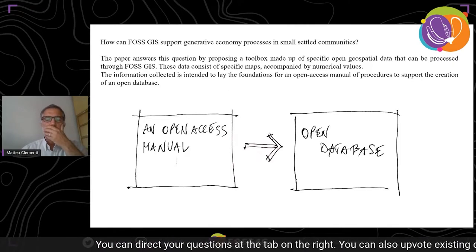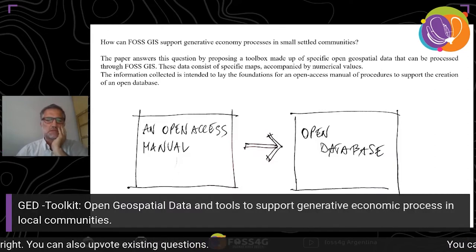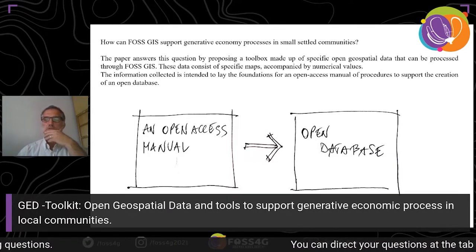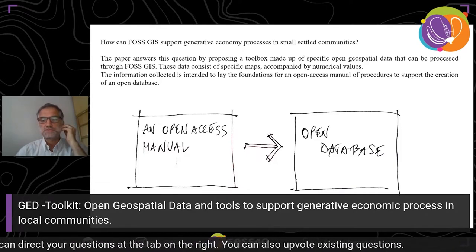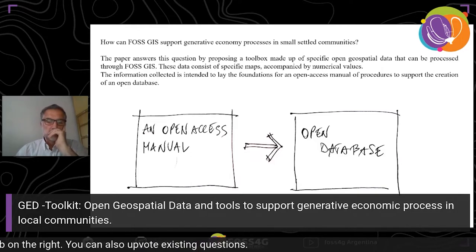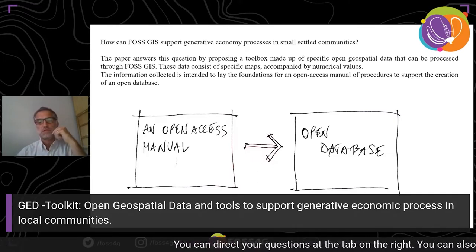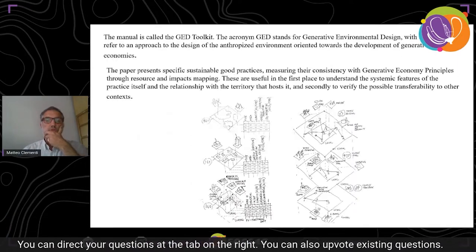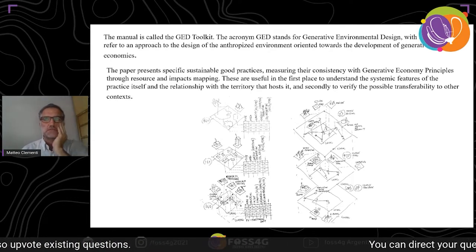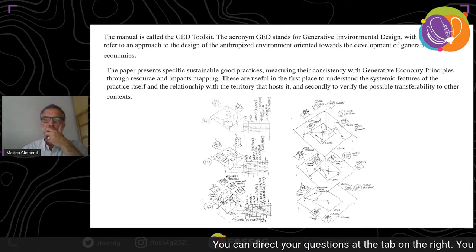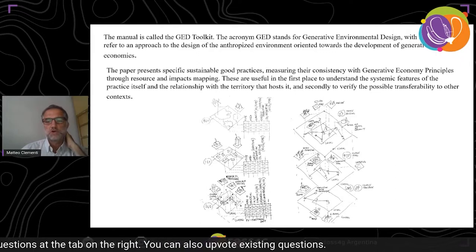The main question the paper would like to answer is: how can FOSS GIS support generative economic processes in small settled communities? The paper answers this by proposing a toolbox made up of specific open geospatial data that can be processed through FOSS GIS. This data consists of specific maps accompanied by numerical values, intended to lay the foundation for an open-access manual of procedures and an open database — called the JET Toolkit. JET stands for Generative Environmental Design, referring to an approach to designing the anthropogenic environment oriented towards generative economies.